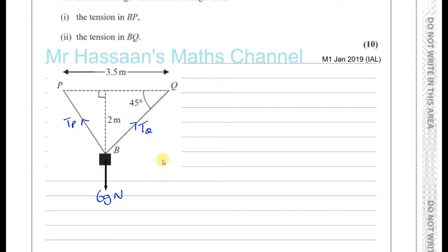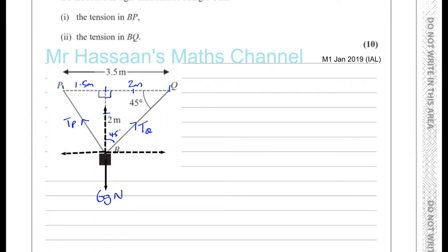Now I need to resolve the forces. This angle here is definitely 90 degrees, so this angle must be 45 degrees. If that's 45 degrees, the distance from B to directly below Q must equal the vertical distance, making this an isosceles triangle. So the vertical distance is 2 meters, and the horizontal distance from P to the foot of the vertical must be 1.5 meters. I need to find the angle at P — let me call it theta — using this right-angle triangle with sides 1.5 and 2.